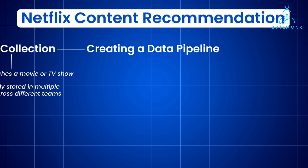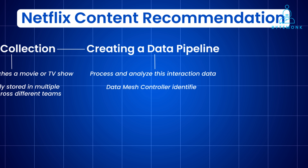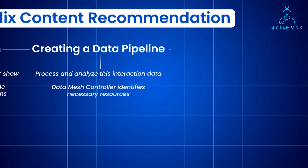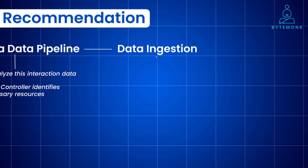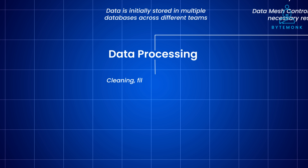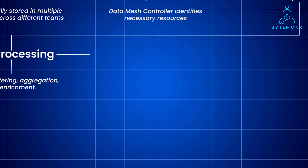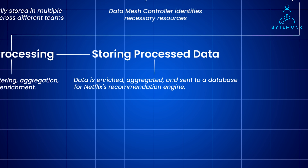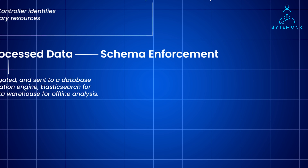The team responsible for improving recommendations creates a data pipeline using the Netflix data mesh platform. The data mesh controller identifies necessary resources — connectors and processors — and configures the pipeline. The pipeline captures data changes from databases using source connectors, and CDC events are published to Kafka topics. Intermediate processors perform data transformations like cleaning, filtering, aggregation, and enrichment, each implemented as a Flink job continuously processing streaming data. The final processed data is sent to a recommendation engine database, Elasticsearch for search indexing, and a data warehouse for offline analysis. All data must conform to predefined schemas using Avro, ensuring only valid data is processed.